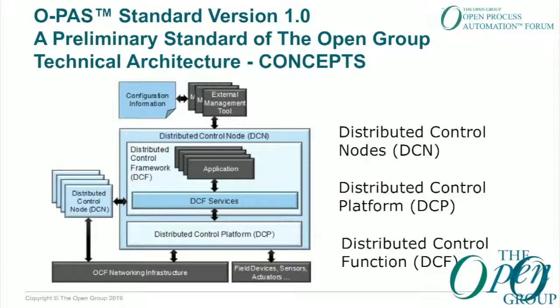Some key concepts in the architecture are important to highlight. The notion of a Distributed Control Node goes way back to the first graphics introduced by Don Bartusiak, Steve Vitar, and others as end users began defining what the industrial world needs from a distributed computing view. The Distributed Control Node is made up of a Distributed Control Platform — which is really a function of the hardware, underlying base system firmware, and low-level software — and then the Distributed Control Functions, which host applications. Those are linked together via Distributed Control Function Services, performing a basis for connectivity and interface development for the standard.